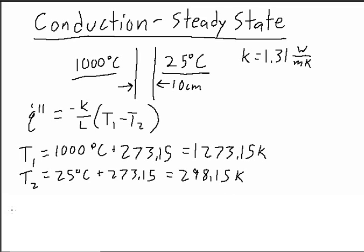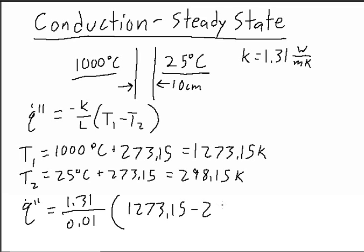Now that we have those in the right units, we can plug them directly into our heat flux equation: (1.31/0.01)(1273.15 - 298.15) = -12.77 × 10³ watts per meter squared.